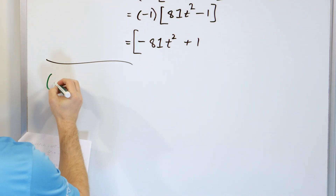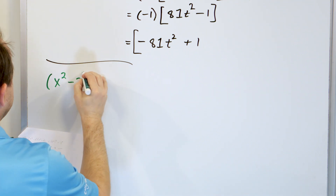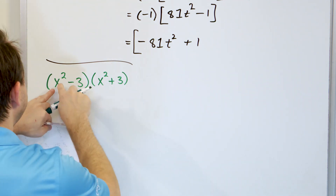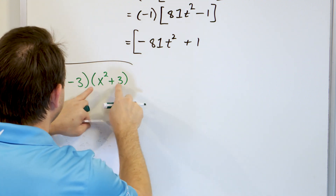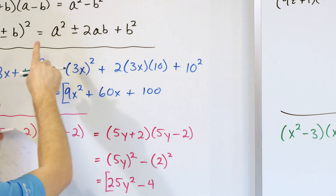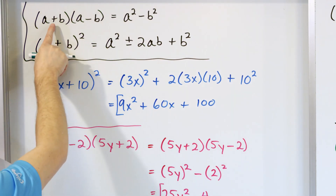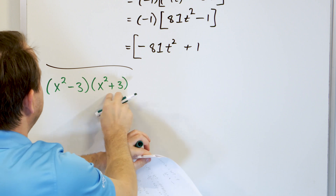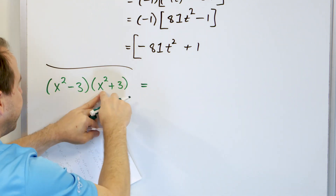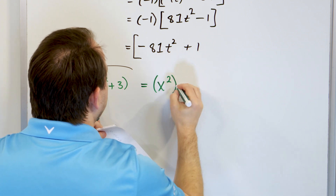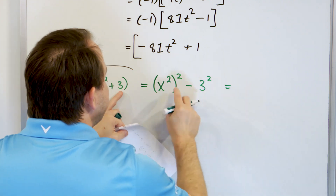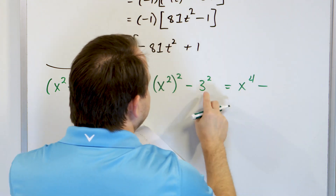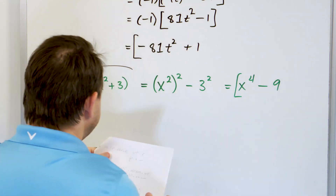What if we have (x² - 3)(x² + 3)? We realize we have the same terms with different signs — one minus and one plus — so this is exactly the (a + b)(a - b) difference of squares form. The answer is the first term squared minus the second term squared: (x²)² - (3)². When you raise a power to a power, you multiply the exponents, giving x⁴ - 9.